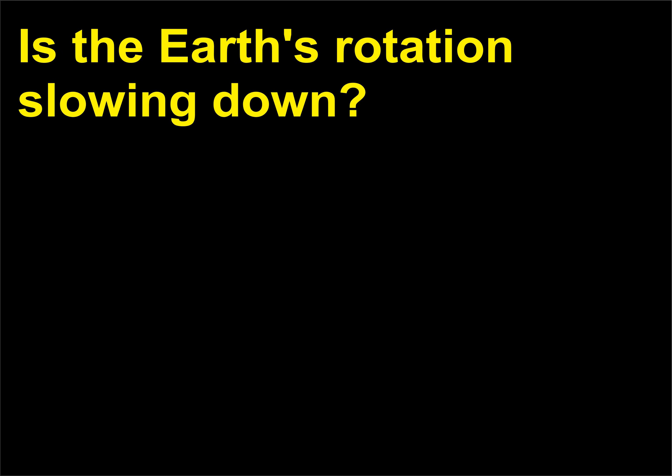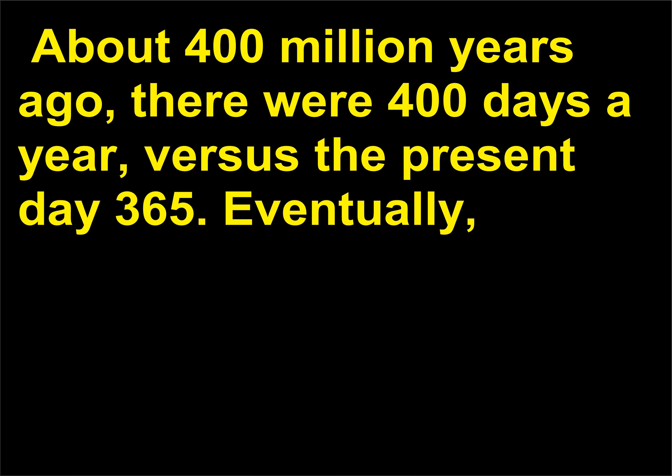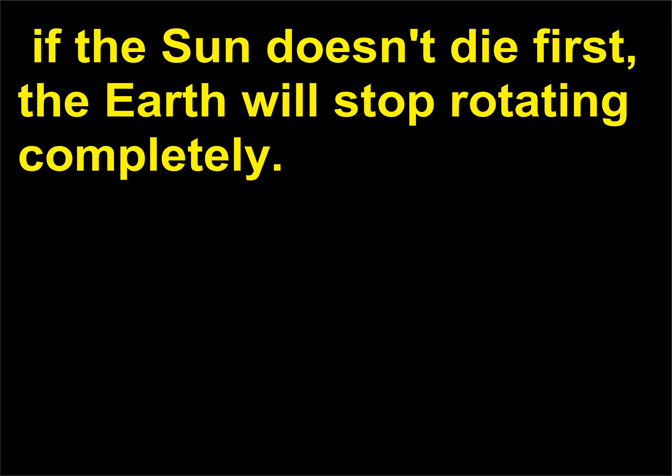Is the Earth's rotation slowing down? Yes. About 400 million years ago, there were 400 days a year, versus the present-day 365. Eventually, if the sun doesn't die first, the Earth will stop rotating completely.